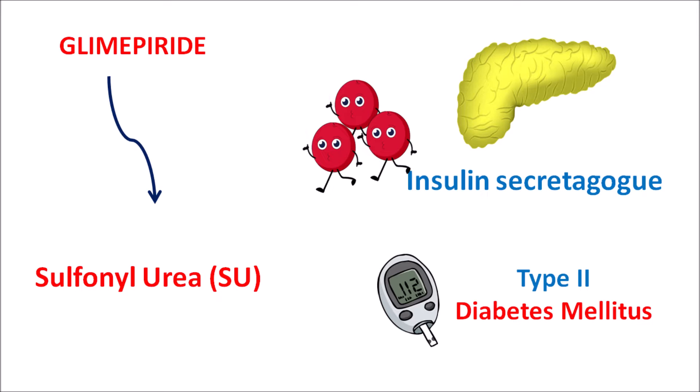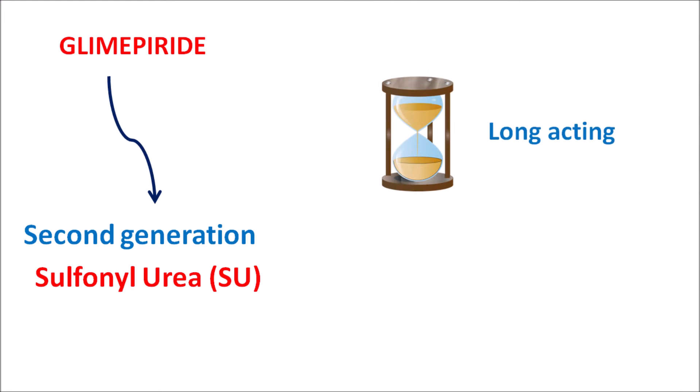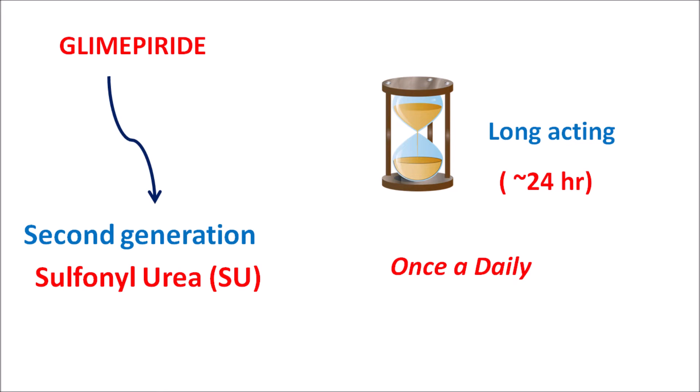This drug is a second generation sulfonylurea with somewhat fewer side effects compared with first generation sulfonylureas. It produces somewhat less hypoglycemia, and it is a long-acting sulfonylurea with around 24 hours duration of action. That's why glimepiride is given as a once daily preparation. Today in this video we are going to see how this drug acts, and what are the important precautions, side effects, and doses.